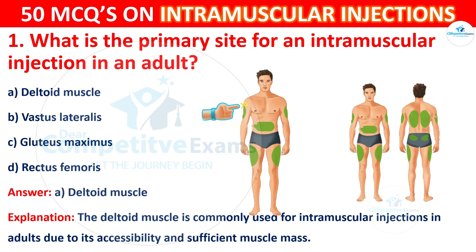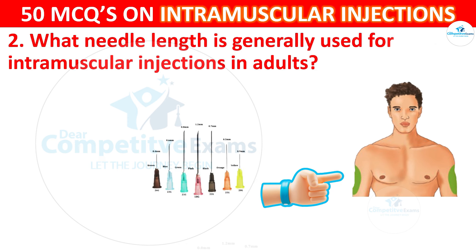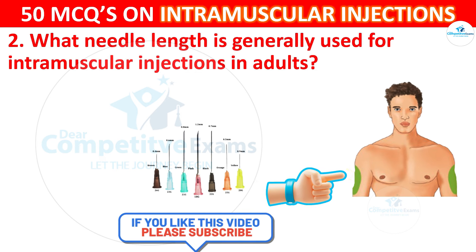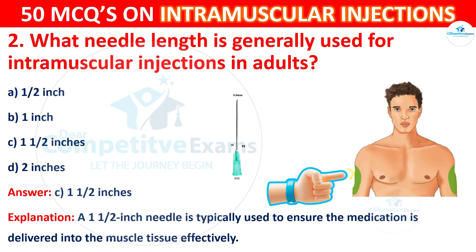Q2: What needle length is generally used for intramuscular injection in adults? The options are: half inch, 1 inch, 1 and a half inches, or 2 inches. The correct answer is 1 and a half inches. A 1.5-inch needle is typically used to ensure the medication is delivered into the muscle tissues effectively.